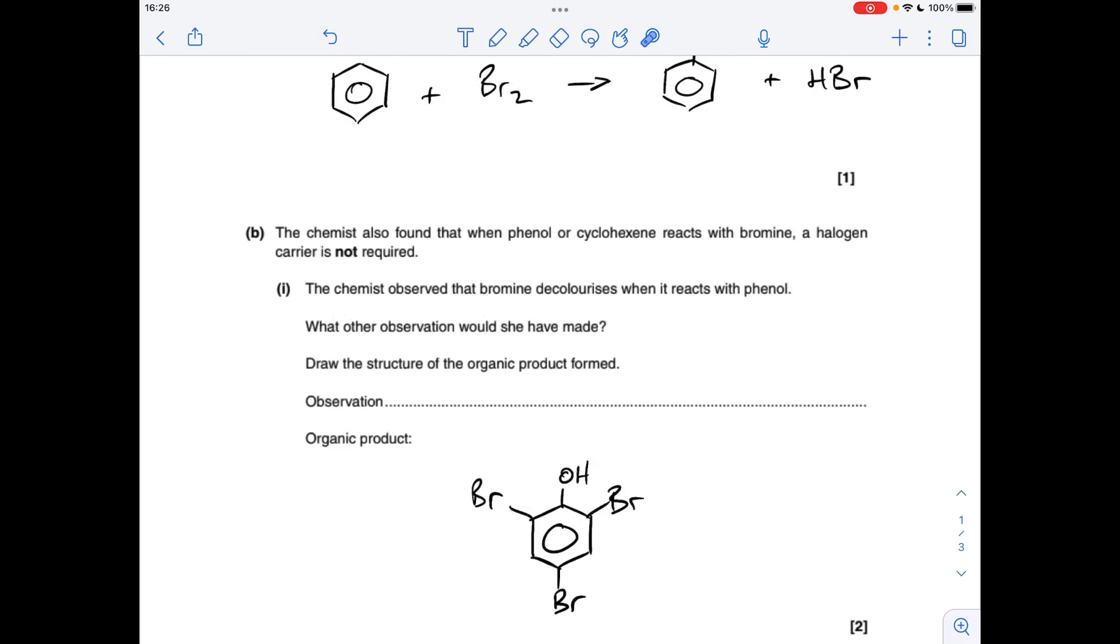The question moves on to the reaction between phenol and bromine now, so we're told that it decolorizes bromine. What's the other observation? Well, it's all linked to the generation of the organic product, so this 2,4,6-tribromophenol is a white precipitate.